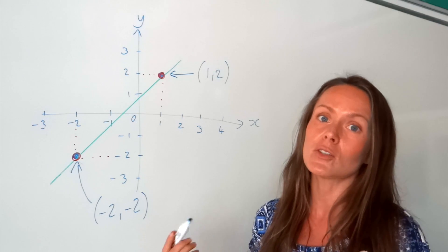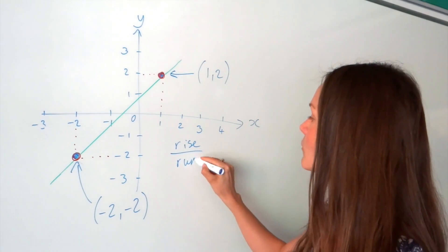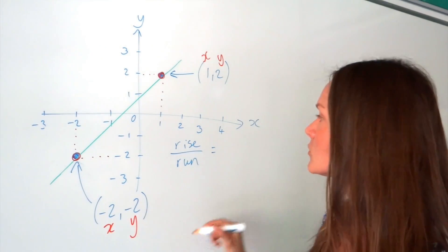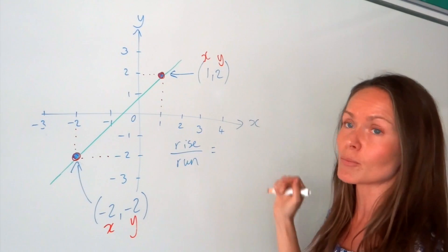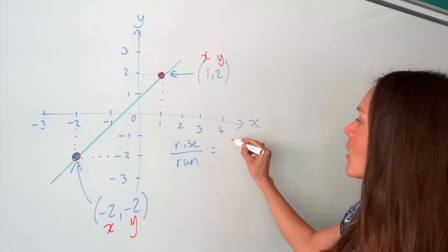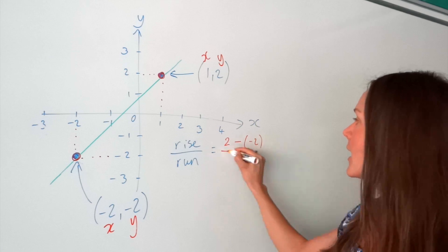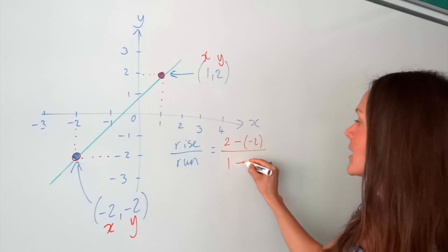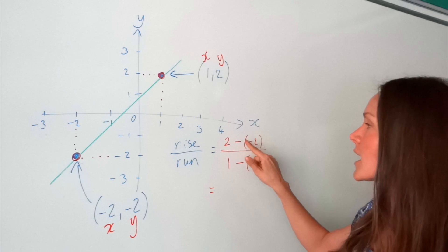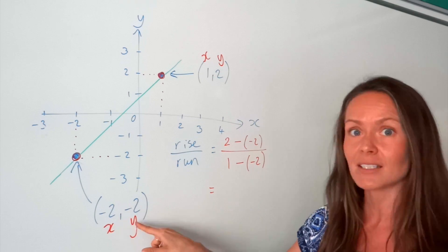Then it's just like before — use rise over run to calculate the gradient. The rise is the difference in the y values and the run is the difference in the x values. Remember, x is first, y is second. I'm going to subtract the y values: two take away negative two on top, and one take away negative two underneath. Watch out for those double negatives — lots of people forget to write down one of the negatives and get the wrong answer. It's always subtract, and these two just happen to be negative as well.